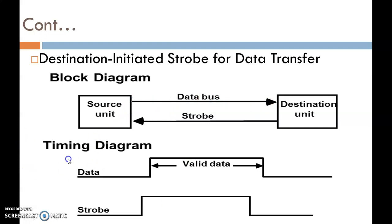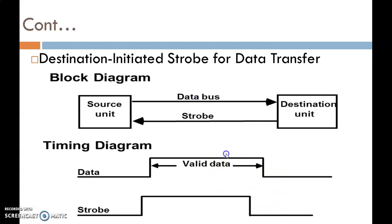Here in the timing diagram, we can see that first of all the Strobe signal is activated. After that, the data signal is activated. Both signals remain active until the valid data is transferred from the source to the destination.